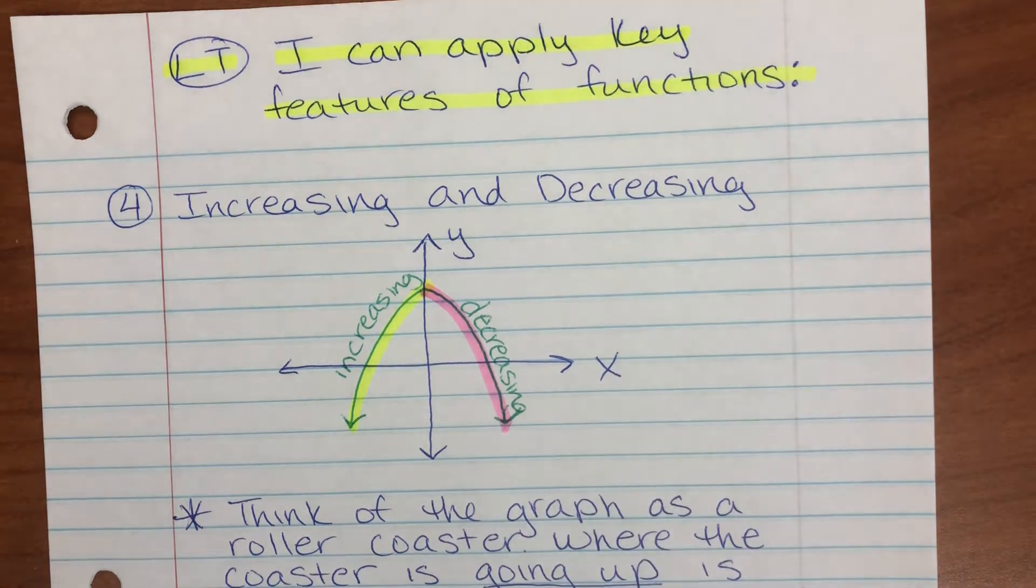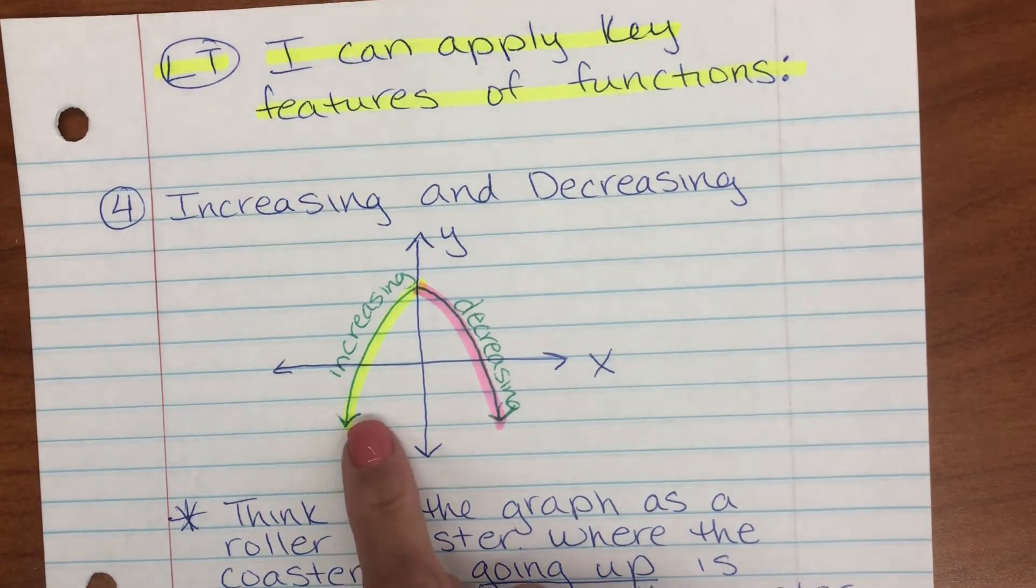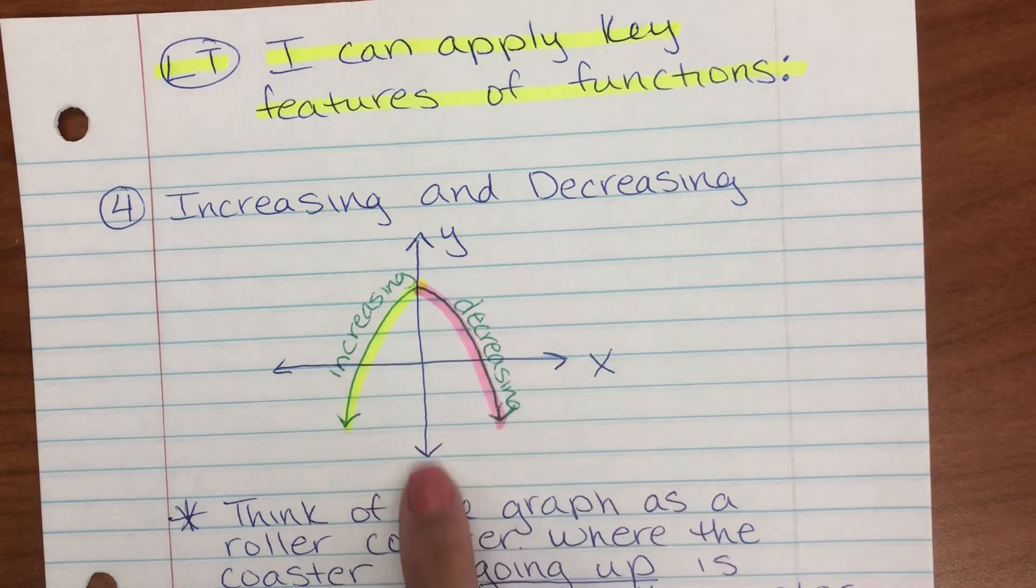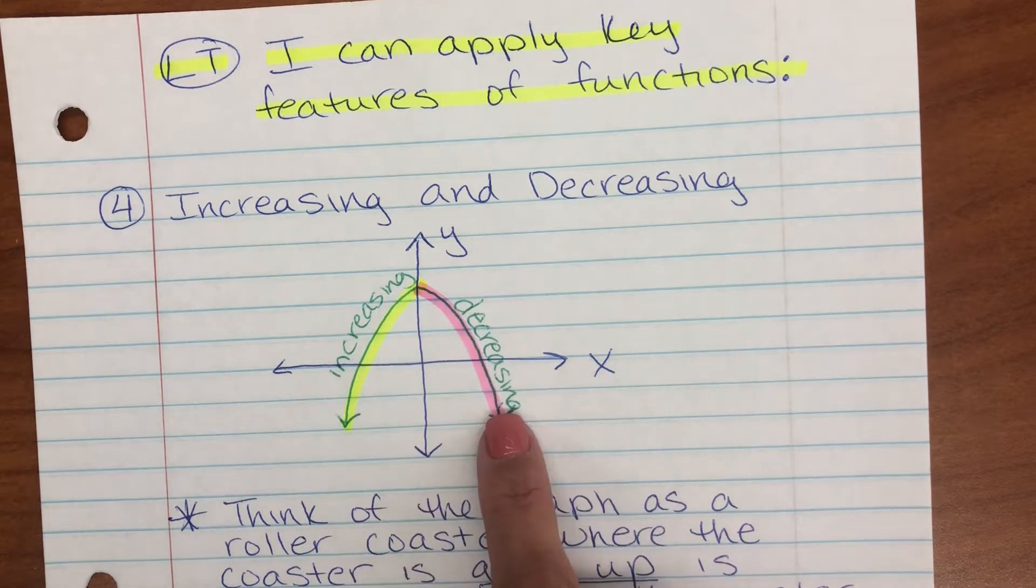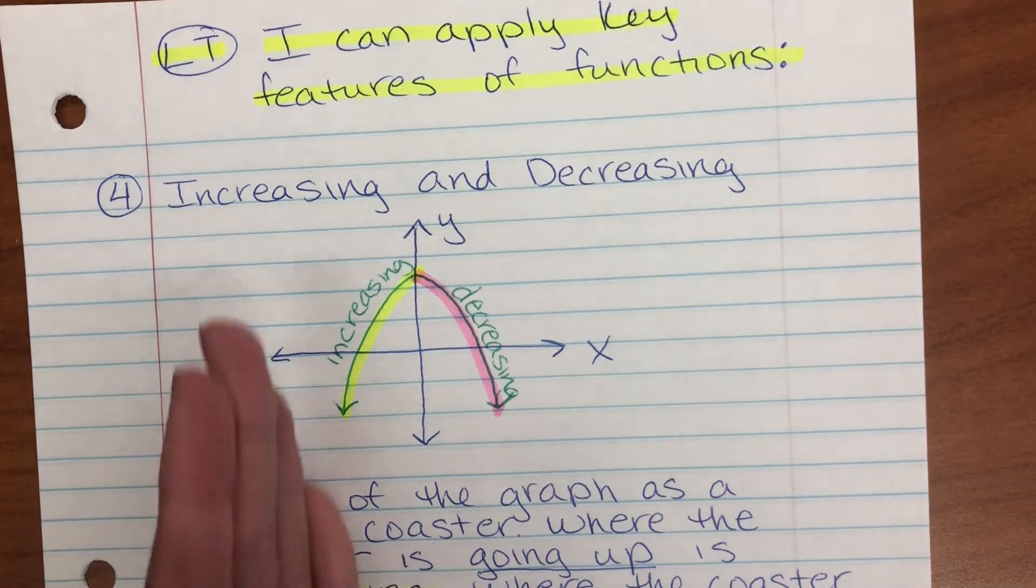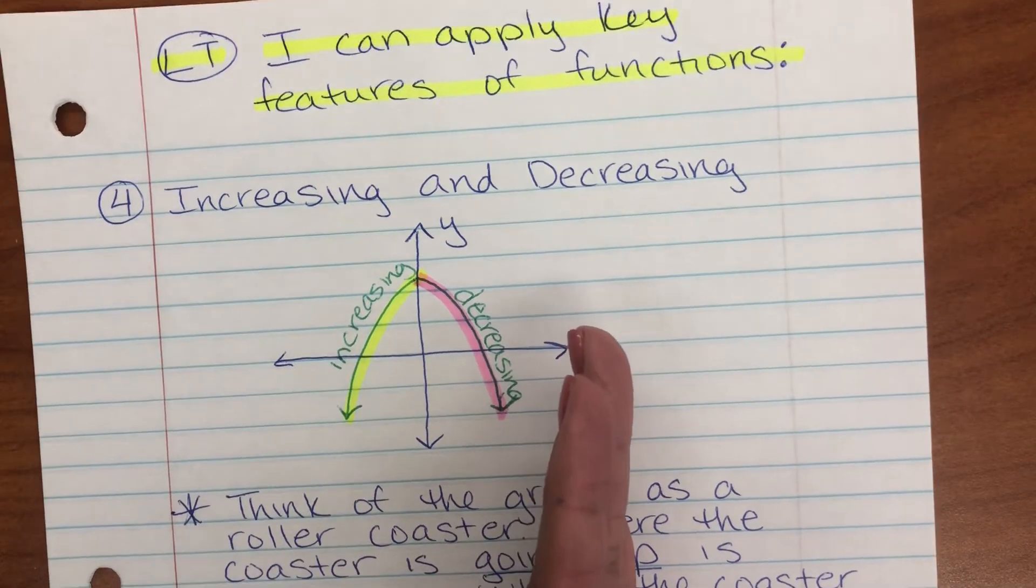When we're talking about increasing and decreasing intervals, we're reading our graph. Here I have a diagram for you. Here's my x and y axis, and here's my graph. It's a parabola opening down, but when we're talking about increasing and decreasing, make sure you're reading from left to right, just like you would a book.